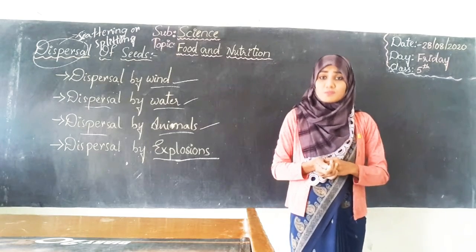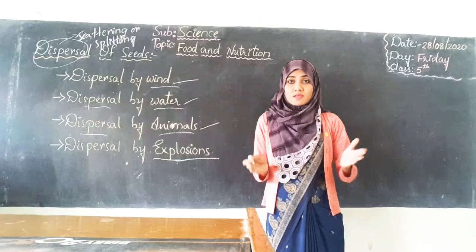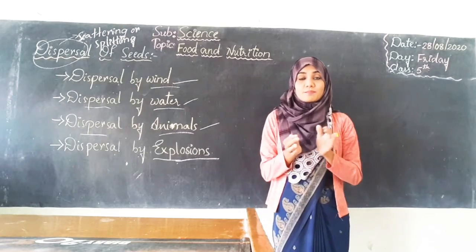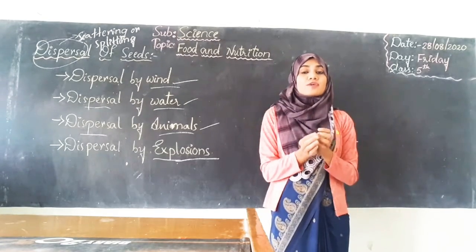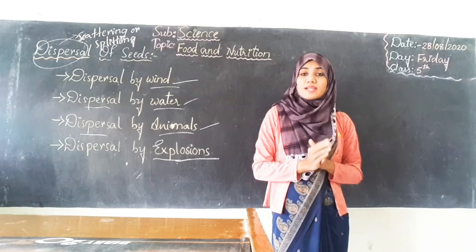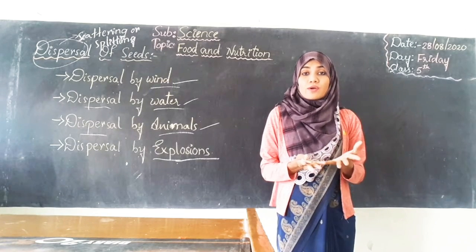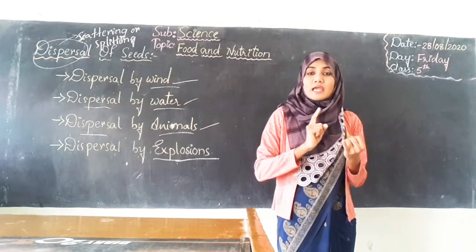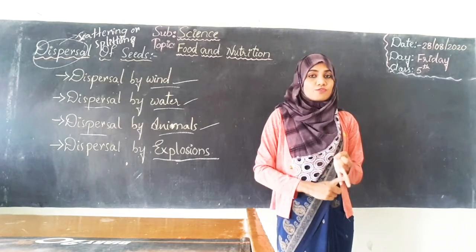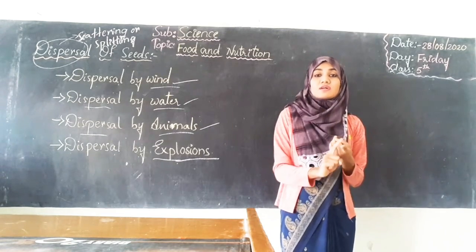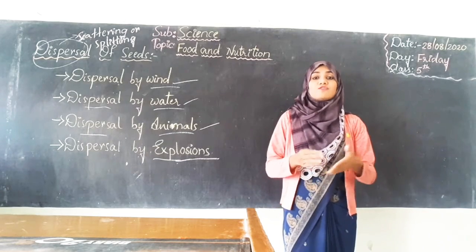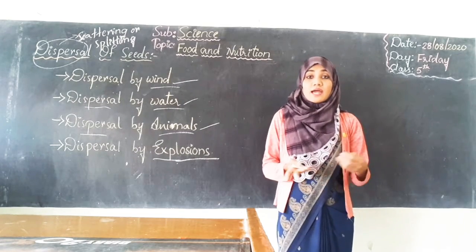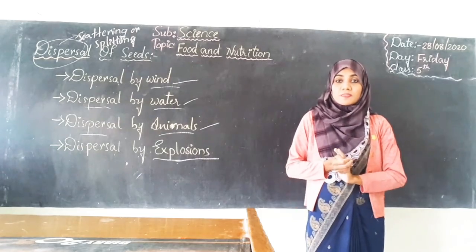Now the question is, why do seeds need to be dispersed? Why do they need to get scattered? Because if all the seeds of a plant — and there will be so many seeds in a particular plant — if all those seeds are sown at one place, the plants will not grow healthy and the plant will die. Because the seeds will not get enough space, enough water, enough air, and enough minerals to grow. Hence finally the seeds will be immature while developing and they will die.